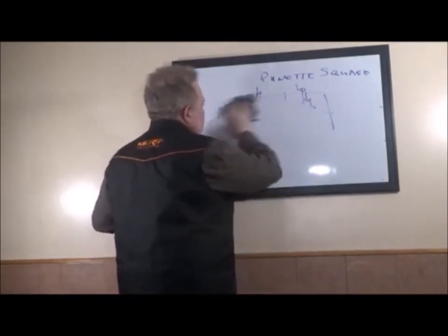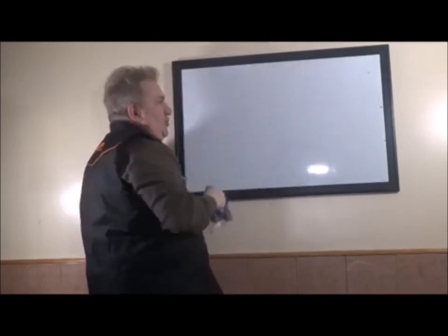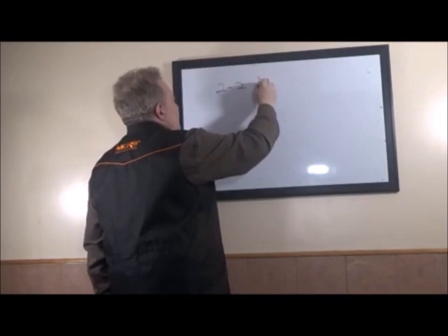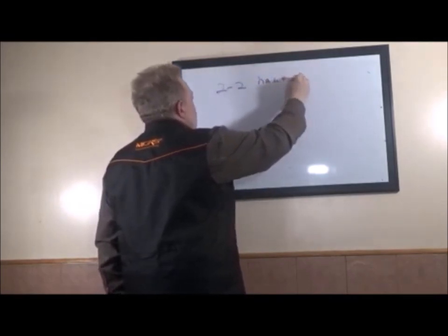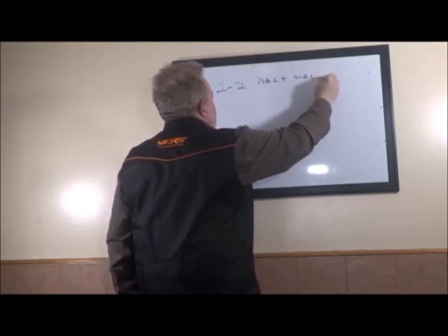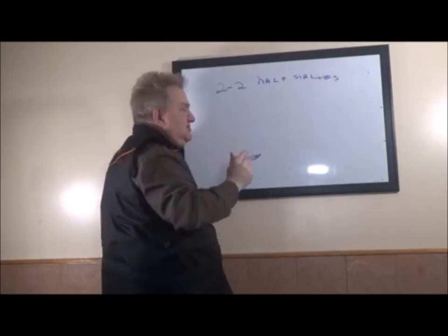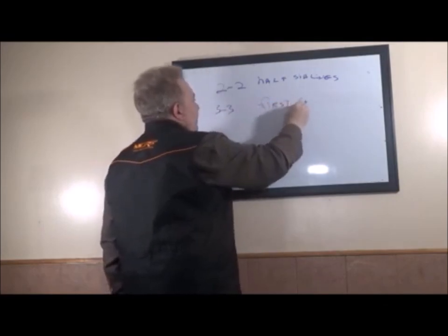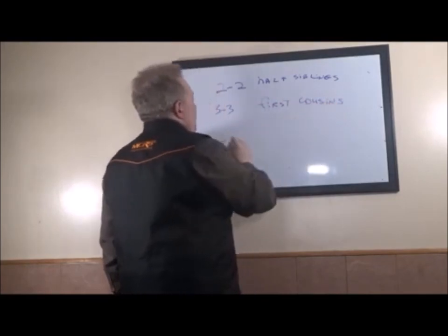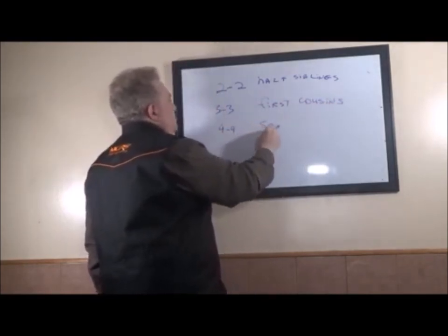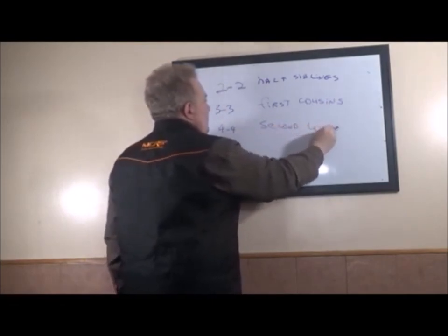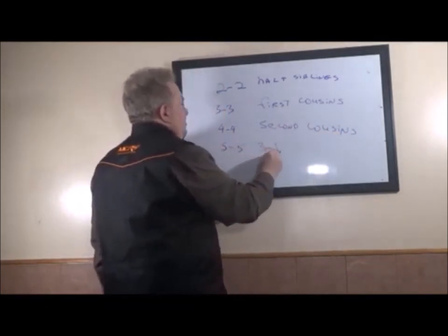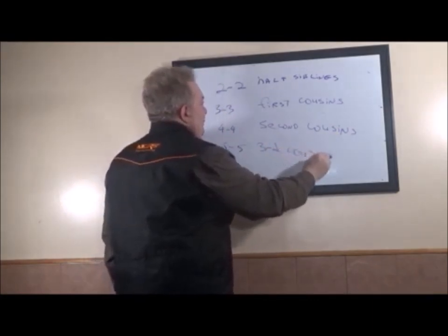Now, in the earlier video, we talked about different combinations of inbreeding and line breeding. We wrote two-two: half siblings, common father or mother. Three-three: first cousins, once removed. Four-four: second cousins, once removed. And five-five: third cousins, once removed.